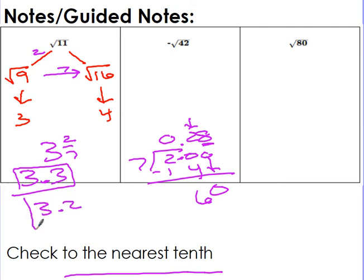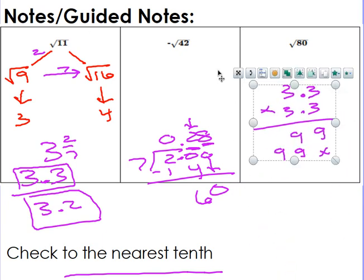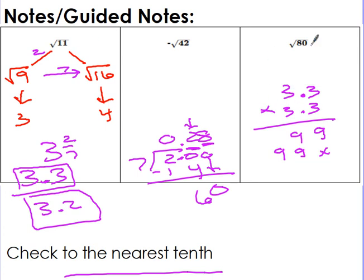Three point two would also be a great estimation — only one tenth off. The way you check your work is to multiply your answer by itself: 3.3 times 3.3. Since I'm estimating the square root of 11, when I multiply my answer by itself it should be really close to 11 — not exact, but close. I got 10.89, which is really close to 11, so that's a good estimation.